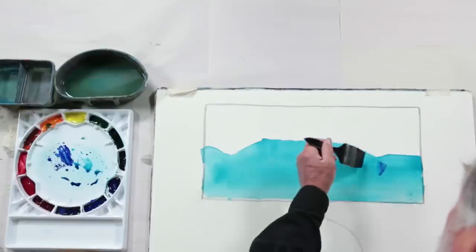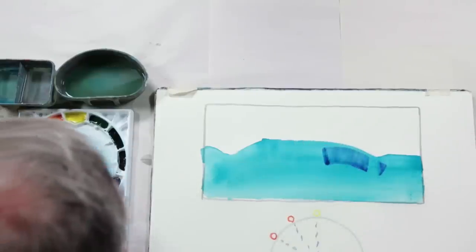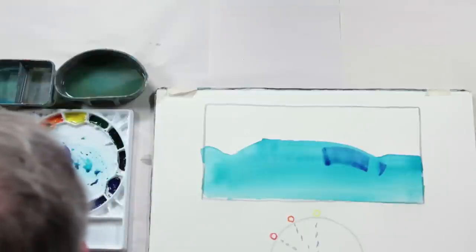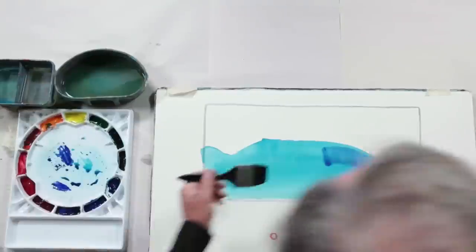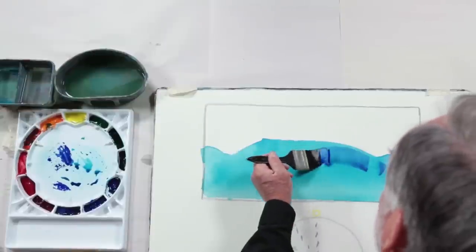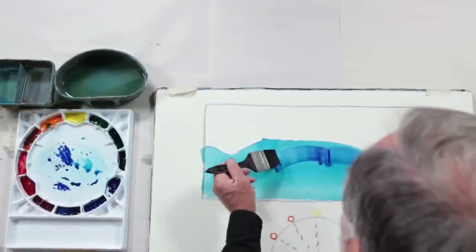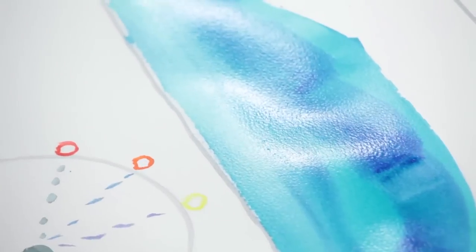So if I drop this in, see what happens with the blue violet. And even if I use a little of the ultramarine violet, it's going to enhance and bring out the phthalo blue.